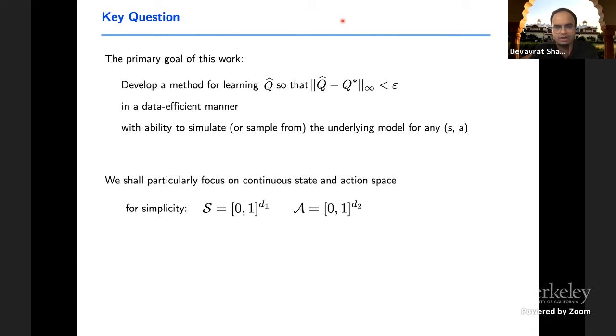I'm going to focus on continuous state space, where the number of states are infinite. But we'll consider nice compact sets. In particular, for simplicity, think of the state being a unit interval in D1 dimension and state action would be [0,1] to power D2 in another dimension. Our interest would be understanding the sample complexity with respect to the scaling of epsilon and D.